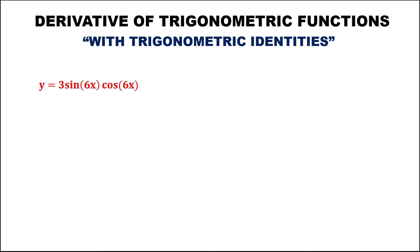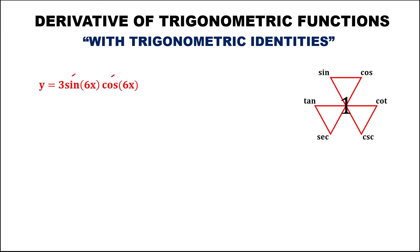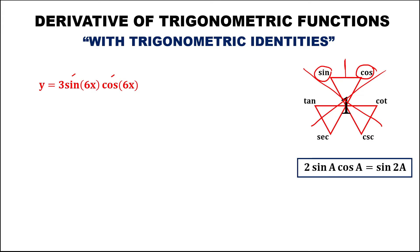For this given, y equals 3 sine 6x cosine 6x. Using this figure — since this is multiplication, the result is the function between them. We have sine times cosine, but since there is no function between sine and cosecant, we cannot use this figure to find the identity for this equation.